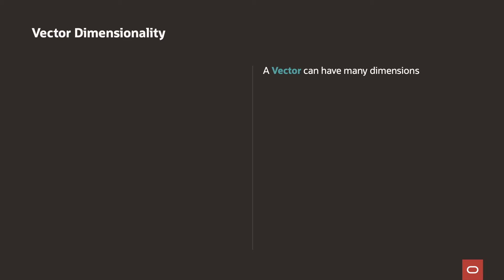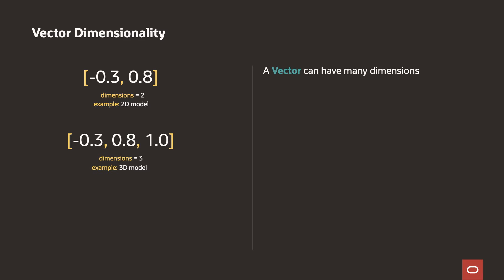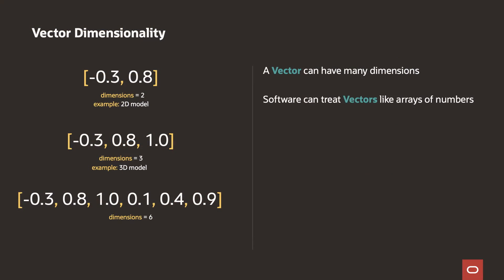Vectors can have many dimensions. For example, a 2D vector has two dimensions — a length and a width. A 3D vector has three dimensions. A vector can have numerous dimensions; it entirely depends on what entity the vector represents and how many dimensions are needed to represent it. Software can treat these vectors like arrays of numbers, and the length of the array defines the different dimensions of the vector.